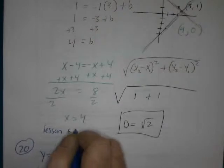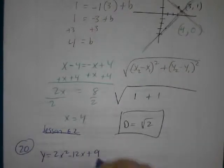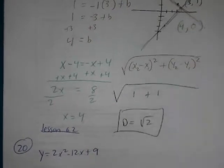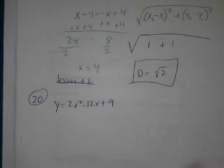So this is lesson 62, number 20. You got to complete the square and graph my parabola. Is that the right one that you wanted? So nobody wanted number 20?